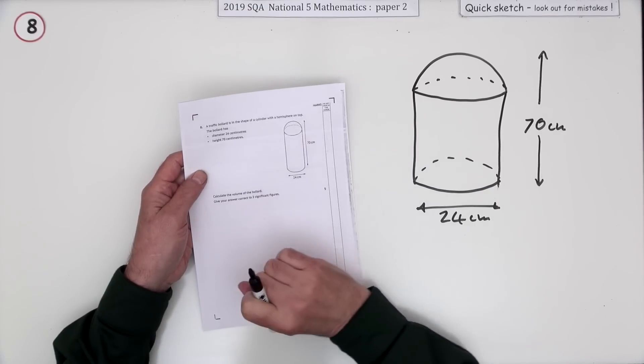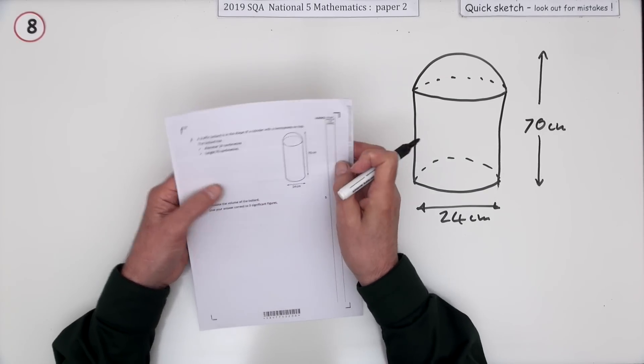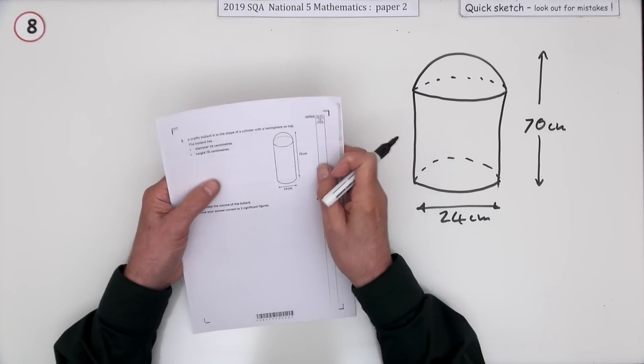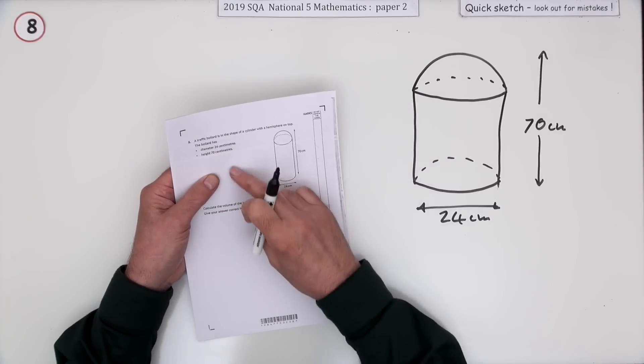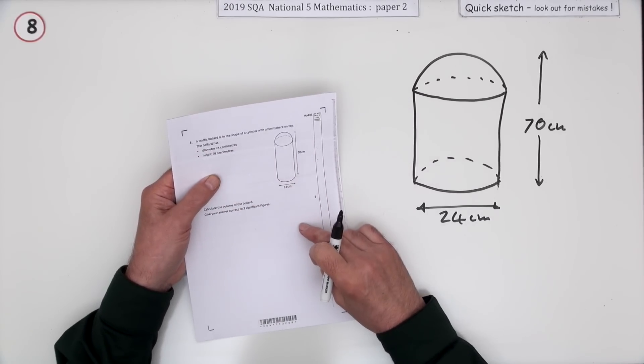Number eight then, volumes question. Composite volumes question. There's two parts joined together. At least they're joined and not subtracted. That makes so much difference. A traffic bollard is in the shape of a cylinder with a hemispherical top.